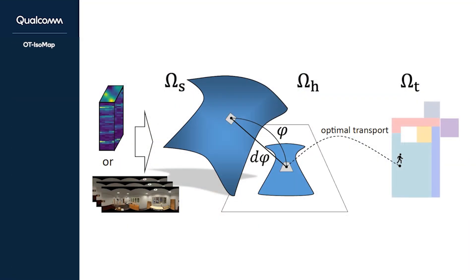The first framework, OT-ISOMAP, formulates the localization problem in the context of parametric manifold learning while leveraging optimal transportation, or OT. The model jointly learns the 2D intrinsic space of the input data and its mapping onto a given topological map of the floor plan. It can be applied on many different modalities like RF, vision, or acoustic. The method solves the localization with only room labels and a floor plan, and it's applicable in real-world scenarios.